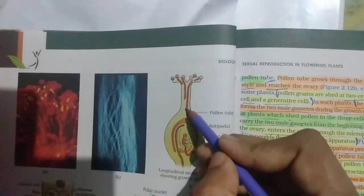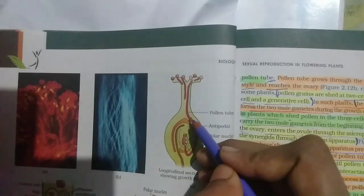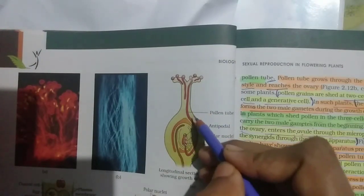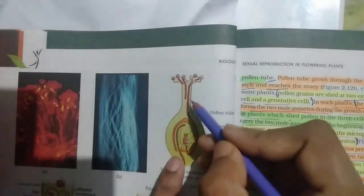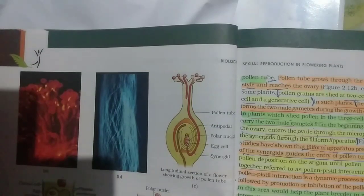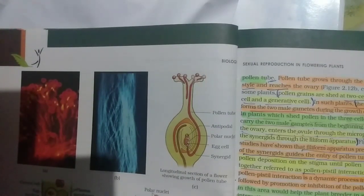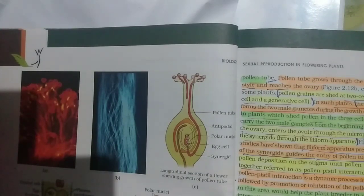This is the pollen tube. The pollen tube grows through the tissue of stigma.